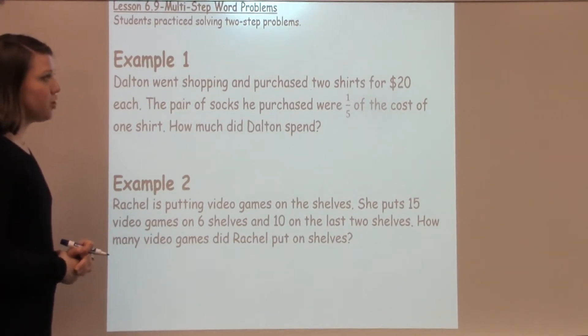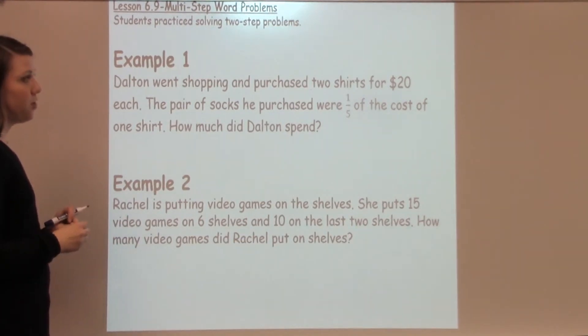Example number one says Dalton went shopping and purchased two shirts for $20 each. The pair of socks he purchased were one-fifth the cost of one shirt. How much did Dalton spend?